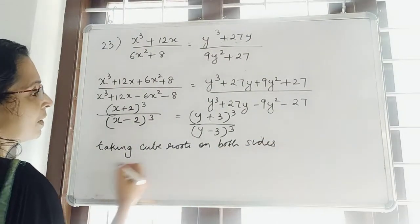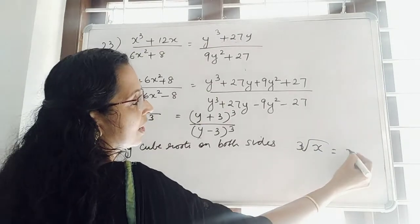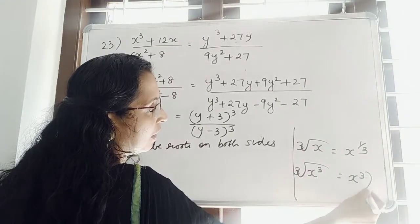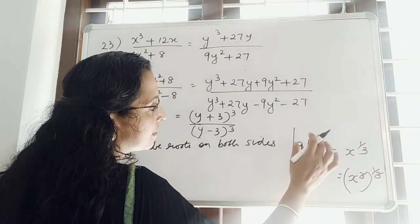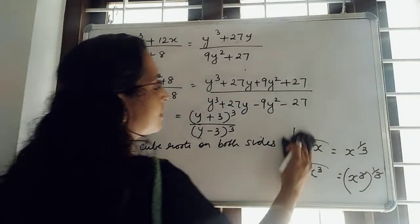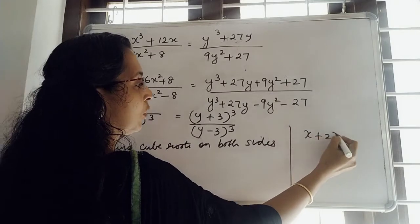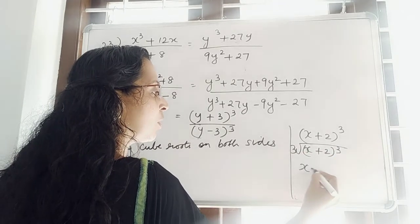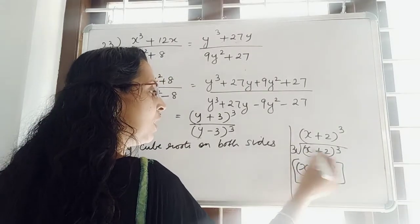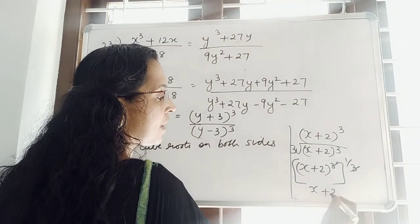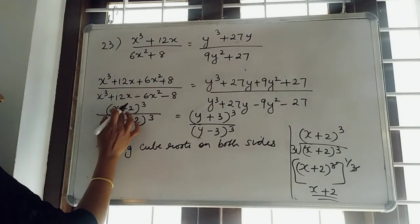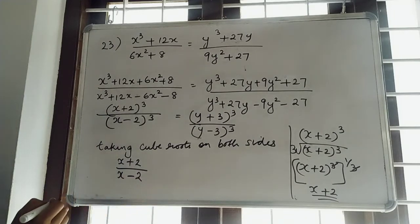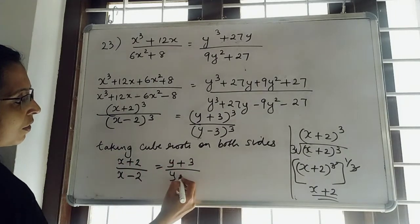Taking cube roots on both sides. The cube root of x³ = x, since x³ raised to 1/3, the 3s cancel. Same case: cube root of (x + 2)³ = (x + 2). So LHS becomes (x + 2) divided by (x − 2), and RHS becomes (y + 3) divided by (y − 3).